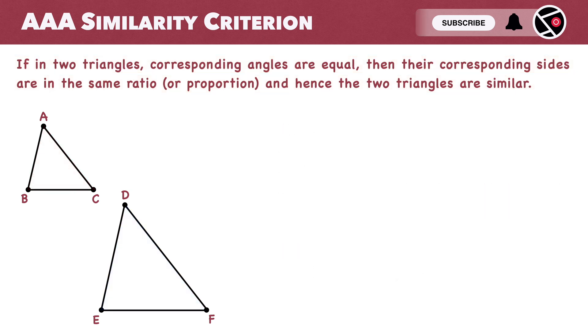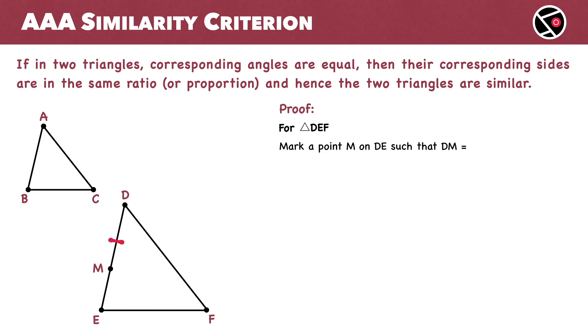Let's now move to the proof. First, for triangle DEF, mark a point M on DE such that DM equals AB. Next, mark another point N on DF such that DN equals AC, then join MN.